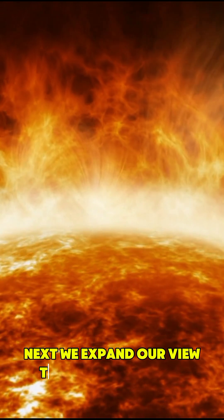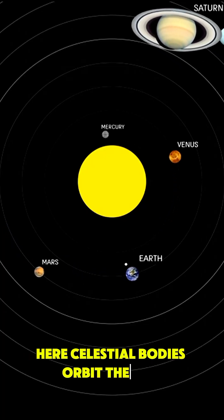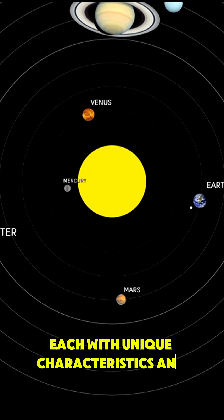Next, we expand our view to the solar system. Here celestial bodies orbit the sun, each with unique characteristics and wonders.